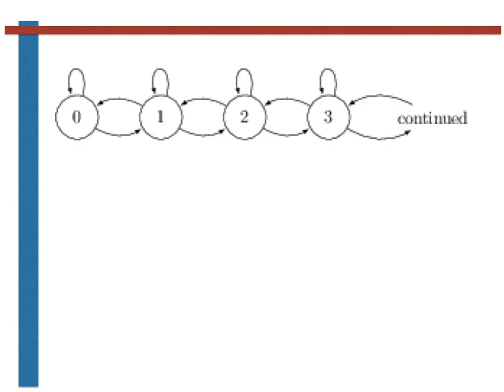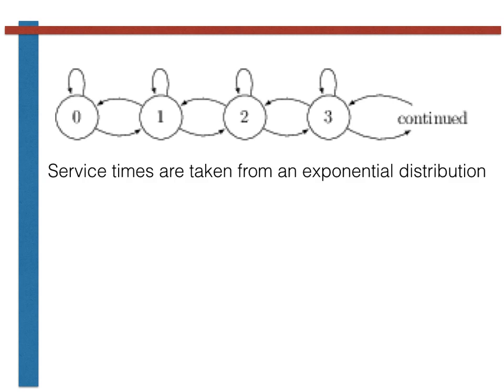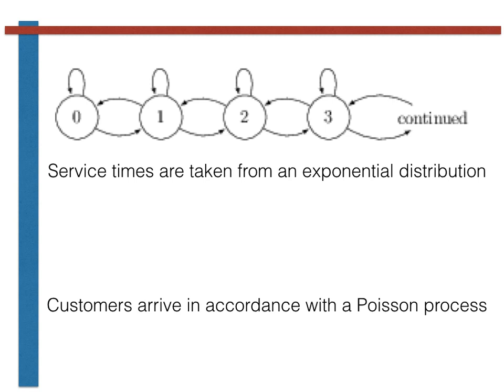Furthermore, in order to model a queue using the mathematics of continuous time Markov chains, we need the service time for each customer to be a random variable taken from an exponential distribution and for the arrival time for each customer to be modeled using a Poisson process.